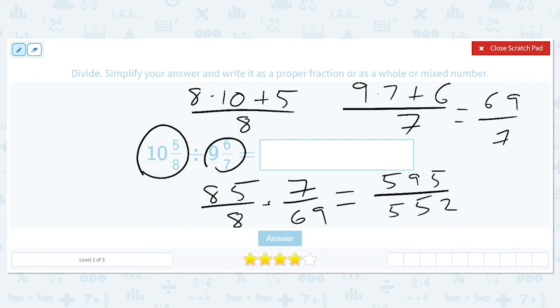These are not nice numbers. So we have to do 595 divided by 552, and we're going to get 1, we're going to get 552. We're going to get 43 left over. So we have 1 and 43 over 552.